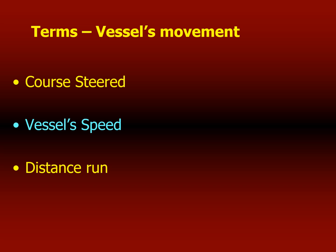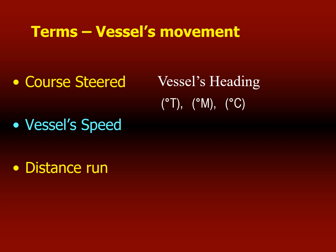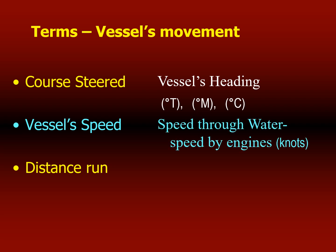In terms of vessel movement, course steered refers to the vessel's heading, which could be in true direction, magnetic heading, or compass heading. True course refers to the gyro compass; magnetic refers to the magnetic compass with no deviation; and compass direction accounts for the ship's structure or cargo influencing the magnetic compass. Vessel speed is normally referred to as speed through water — the speed by engines in knots. Distance run is calculated by multiplying speed by time.